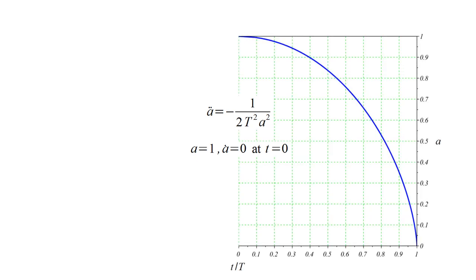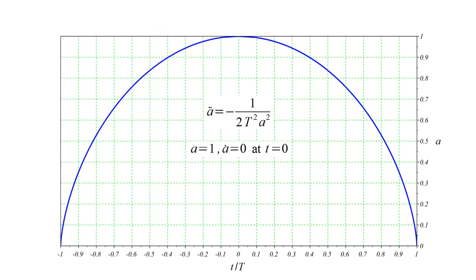Solving the equation for future times, we get a graph that starts out flat and curves downward. The scale factor decreases ever more rapidly and reaches zero at time big T. We can also solve the equation for past times. The scale factor's past behavior is the mirror image of its future behavior. As we go into the past, the scale factor decreases ever more rapidly and reaches zero at time minus big T.